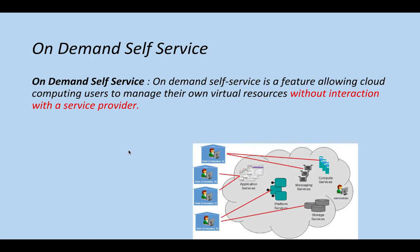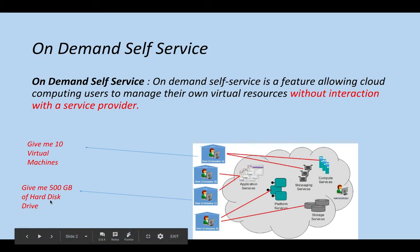Depending on your need and your demand, whatever resources you require, you should be able to get them. This is the first characteristic to look for when choosing a service provider — is there a provision to go ahead and get those resources at any point of time? If company A says give me 10 virtual machines, I should be able to get that with a few self-service clicks, without calling or emailing the service provider. Similarly, if I need 500 GB or two terabytes of hard disk drive, I should be able to get those services without any interruption.